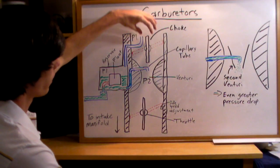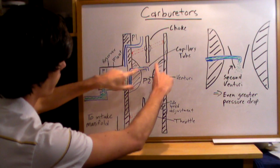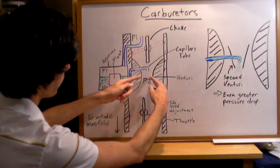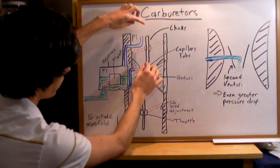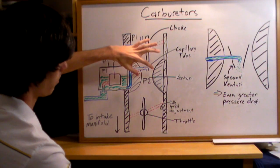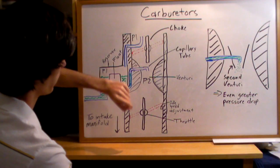You'll have air flowing in, and then you have this venturi where the amount of space that the air has to flow in gets smaller. So its velocity increases, and as its velocity increases, its pressure drops based on the Bernoulli principle.